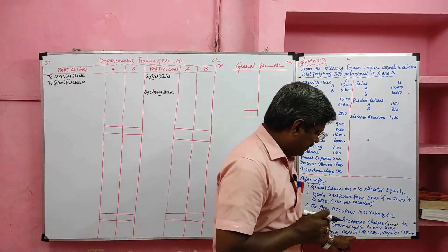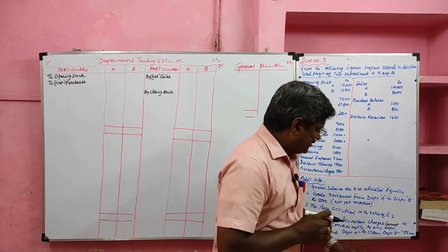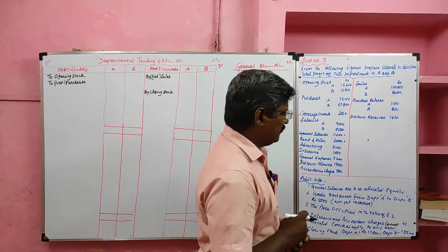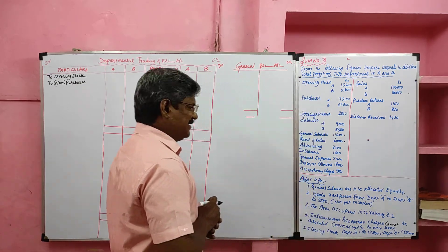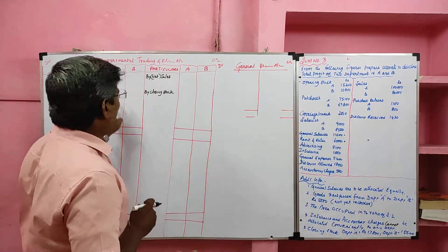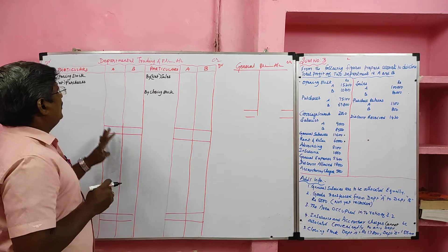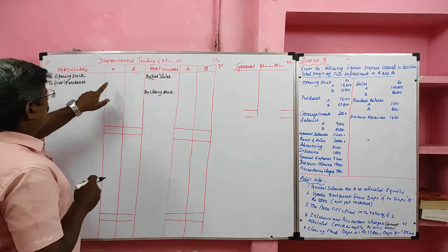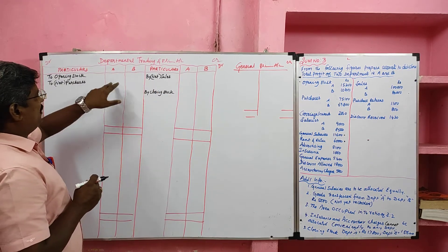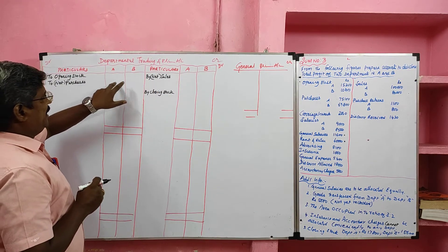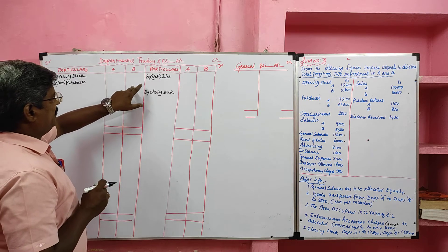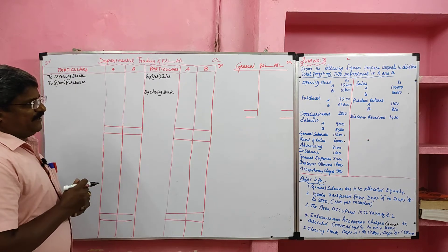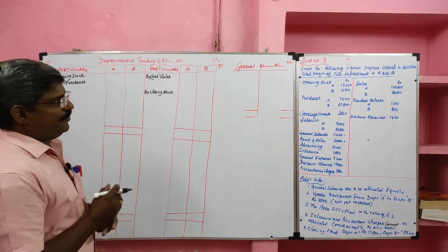At last, closing stock of department A is rupees 17,800 and department B is 15,600. I have drawn the format — departmental trading profit and loss account — with two columns, one for department A and another for department B. The second part is the profit and loss account.